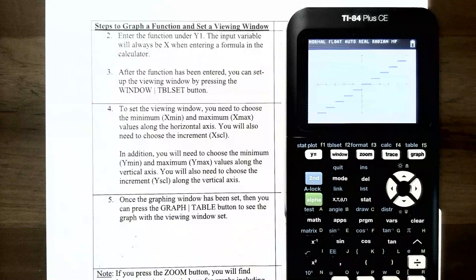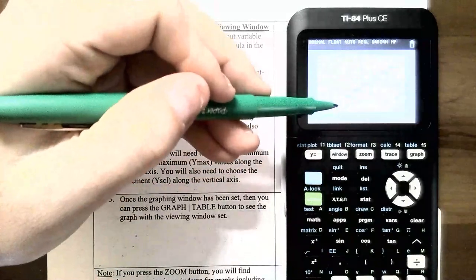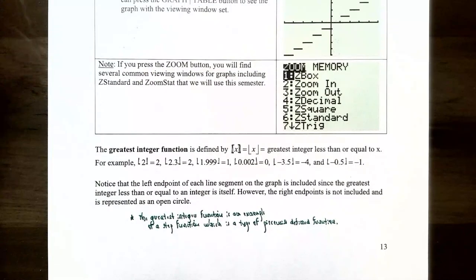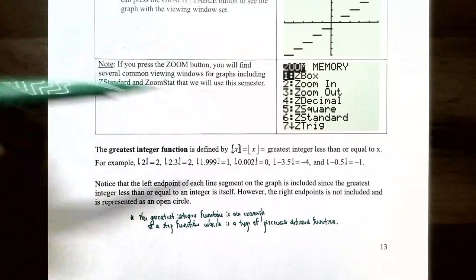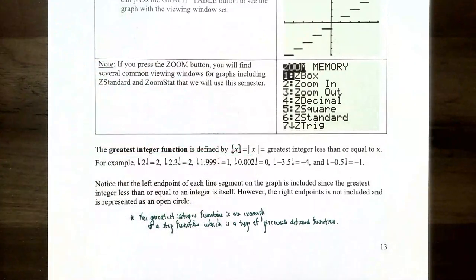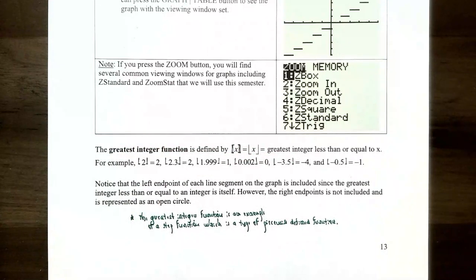The greatest integer function is a step function because its graph looks like steps or a staircase. It is defined as the greatest integer less than or equal to x, also called the floor function in computer science, written with double square brackets on either side of x. Integers include negative three, negative two, negative one, zero, one, two, three, and so on — all positive and negative whole numbers and zero.